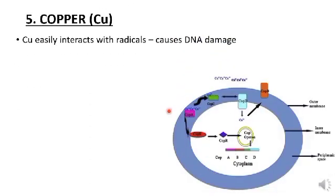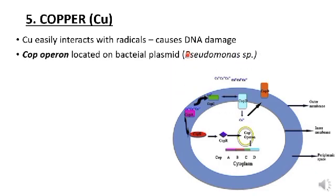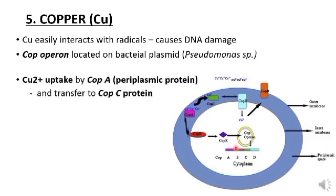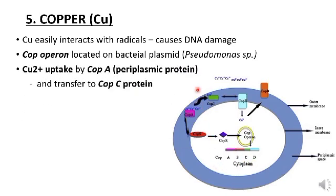Copper easily interacts with radicals and causes DNA damage. The cop operon is involved in the resistance mechanism, located on the bacterial plasmid, and contains different genes such as CopA, CopB, CopC, and CopD. Copper enters into the cell through the porous outer membrane.